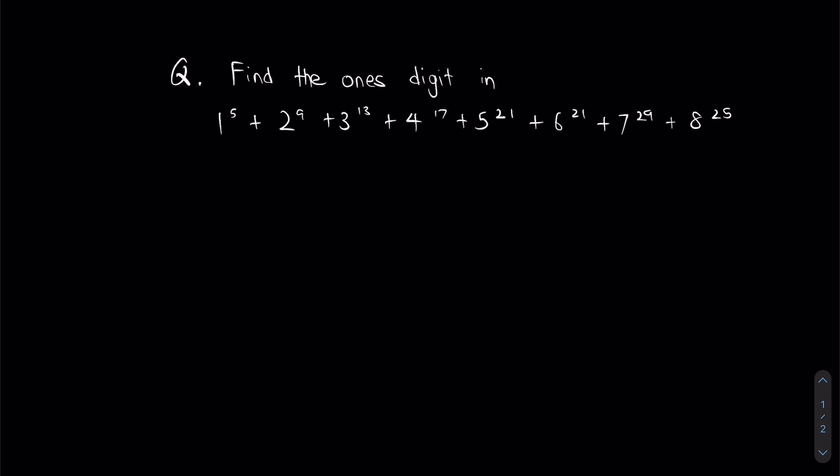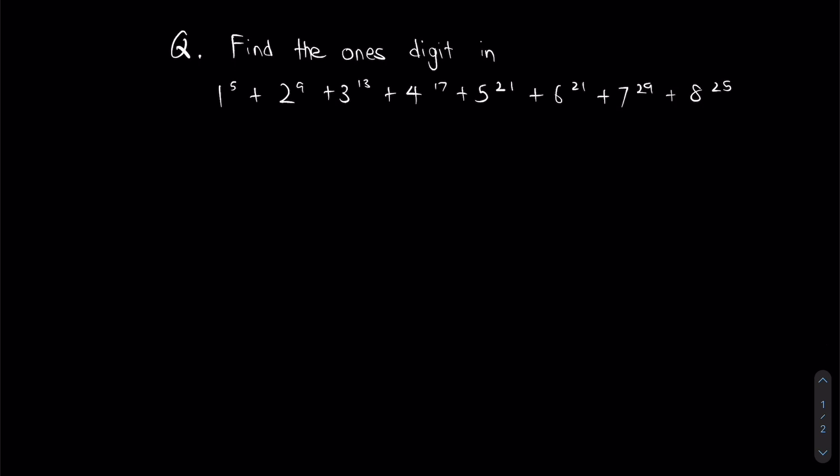So for this question, we are actually only interested in the ones digit. For every single number from 1 to 9, there is actually a pattern we can follow for the ones digit. For number 1, obviously, no matter how many times you multiply 1, the number will still be 1. So I can immediately just say that the ones digit for 1 to the power of 5 is 1.